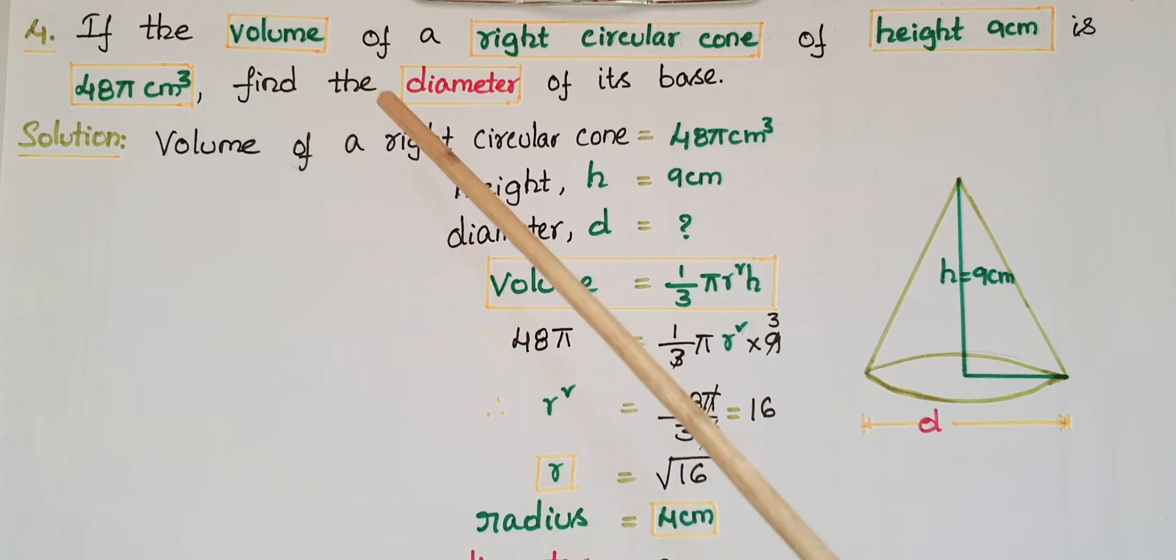So here the volume of the right circular cone is given, that is 48π centimeter cube, and the height of the cone is also given, h equals 9 centimeters. We have to find the diameter of the base.